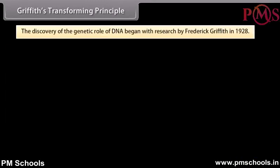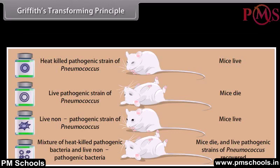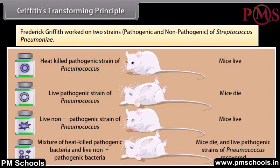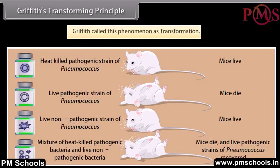Griffith's Transforming Principle. The discovery of the genetic role of DNA began with research by Frederick Griffith in 1928. Frederick Griffith worked on two strains — pathogenic and non-pathogenic — of Streptococcus pneumoniae. Griffith found that when he mixed the heat-killed remains of the pathogenic S strain with living cells of the non-pathogenic R strain, some of these cells became pathogenic. Griffith called this phenomenon transformation.